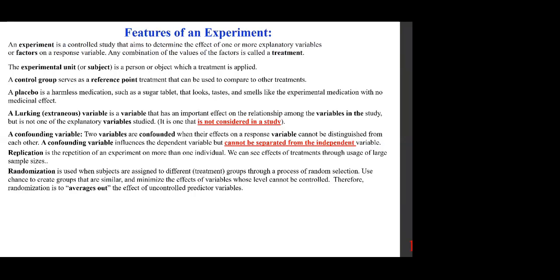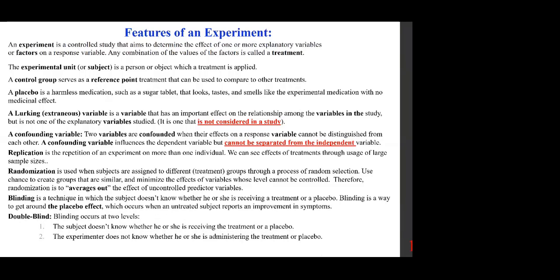Replication is the repetition of an experiment on more than one individual — we can see effects of treatments through large sample sizes. Randomization is used when subjects are assigned to different treatment groups through a process of random selection; it minimizes the effects of variables whose levels cannot be controlled and averages out uncontrolled predictor variables. Blinding is a technique where the subject doesn't know whether they are receiving a treatment or a placebo, to get around the placebo effect.